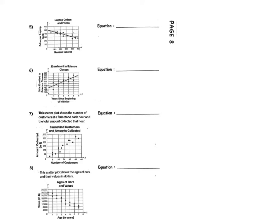Welcome to page 8. On page 8, you are going to write the line of best fit for each of the scatter plots you've been given. In number 5 and number 6, the line has been drawn for you. But in number 7 and number 8, you'll have to draw your own line of best fit.